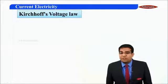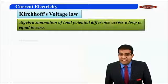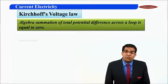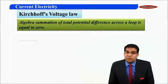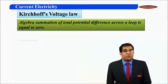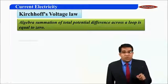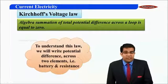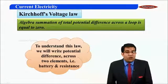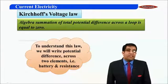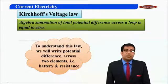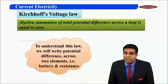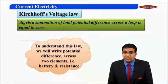What exactly does Kirchhoff's voltage law state? It states that the algebraic summation of total potential difference across a loop is equal to zero. To understand this law, we will write the potential difference across our two basic elements — that is, battery and resistance.